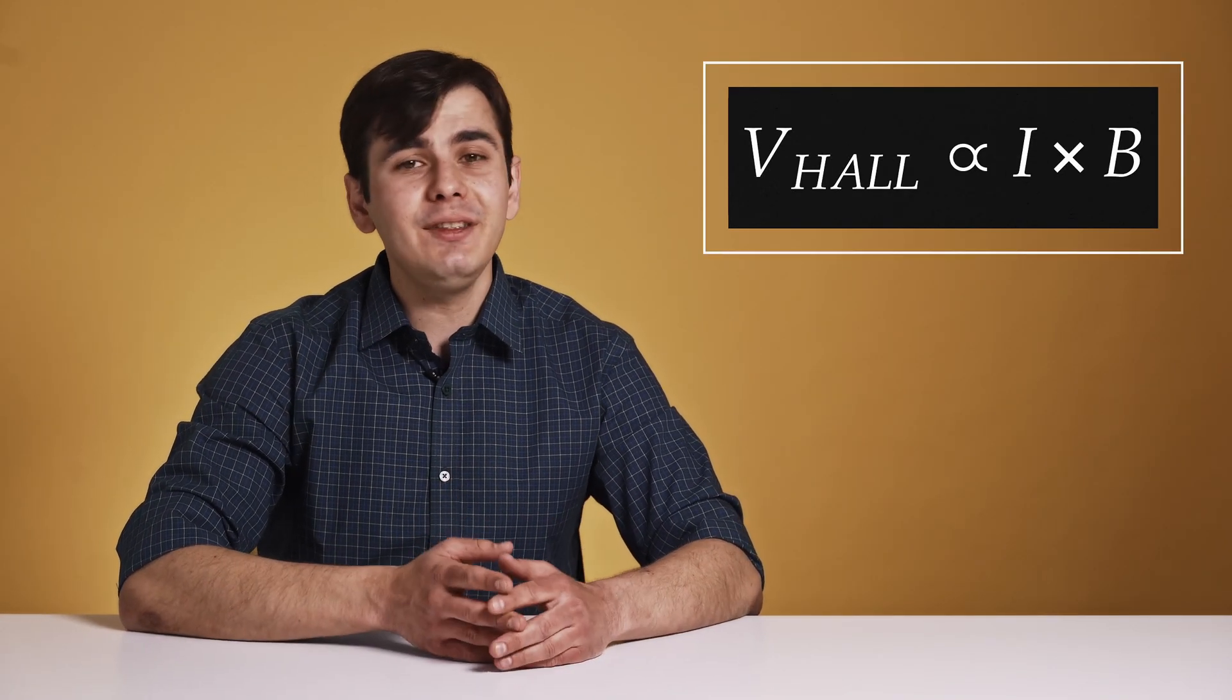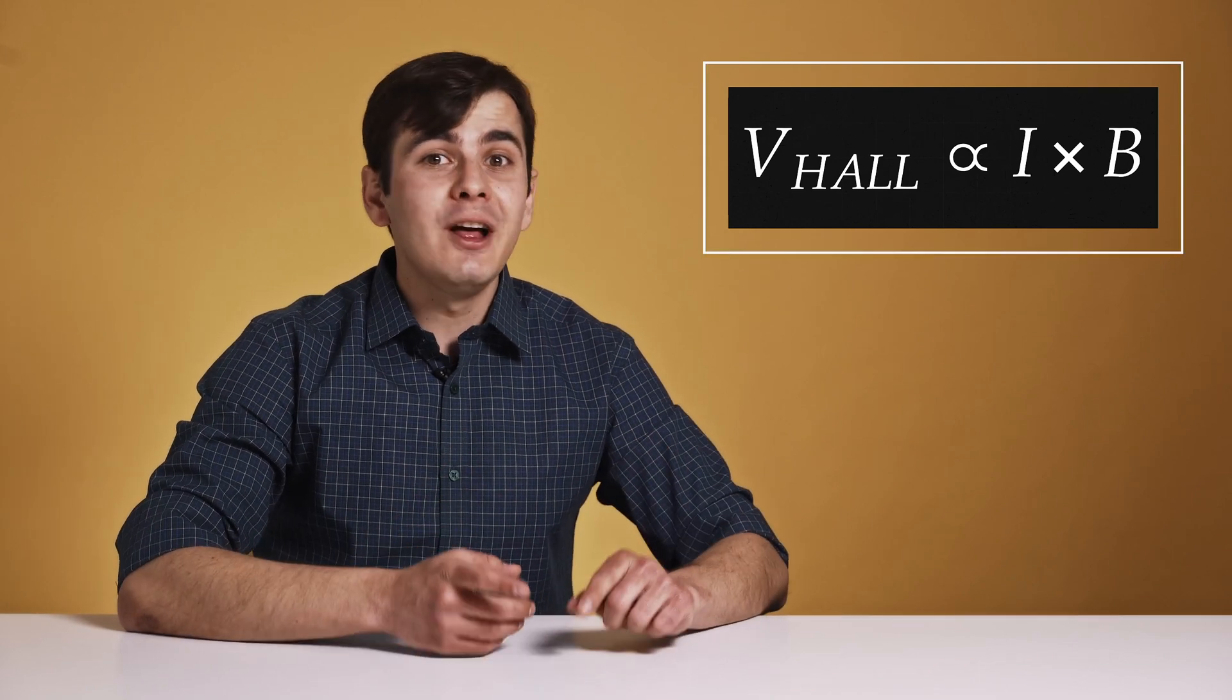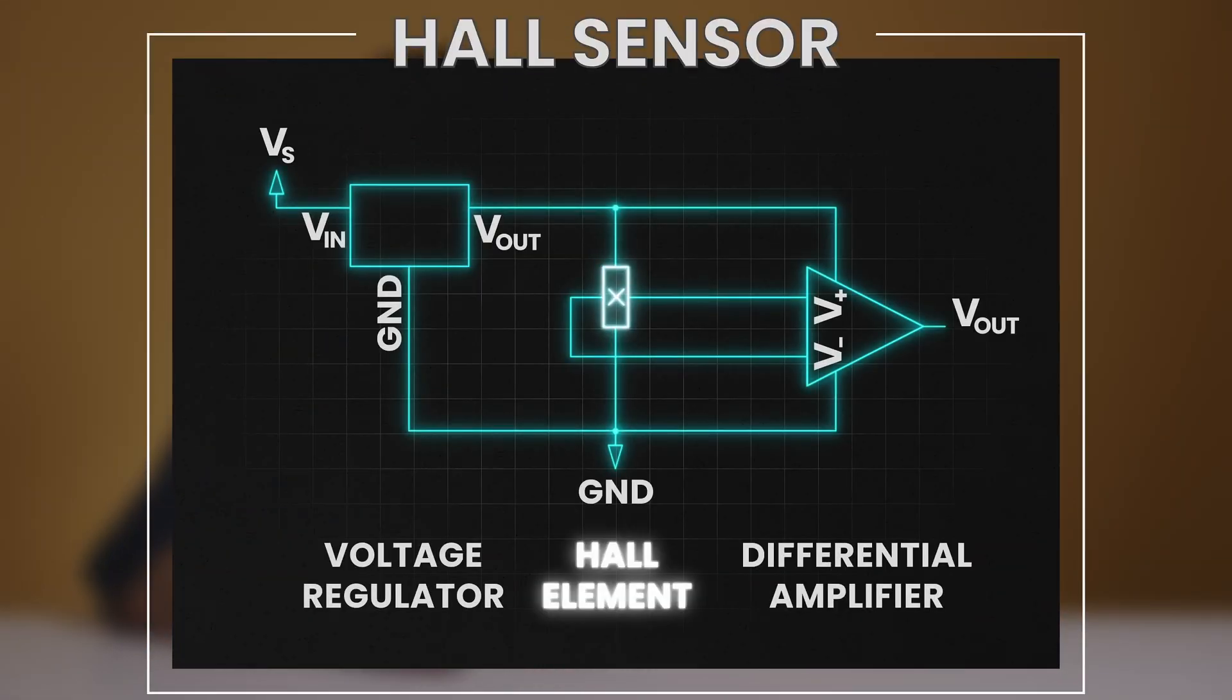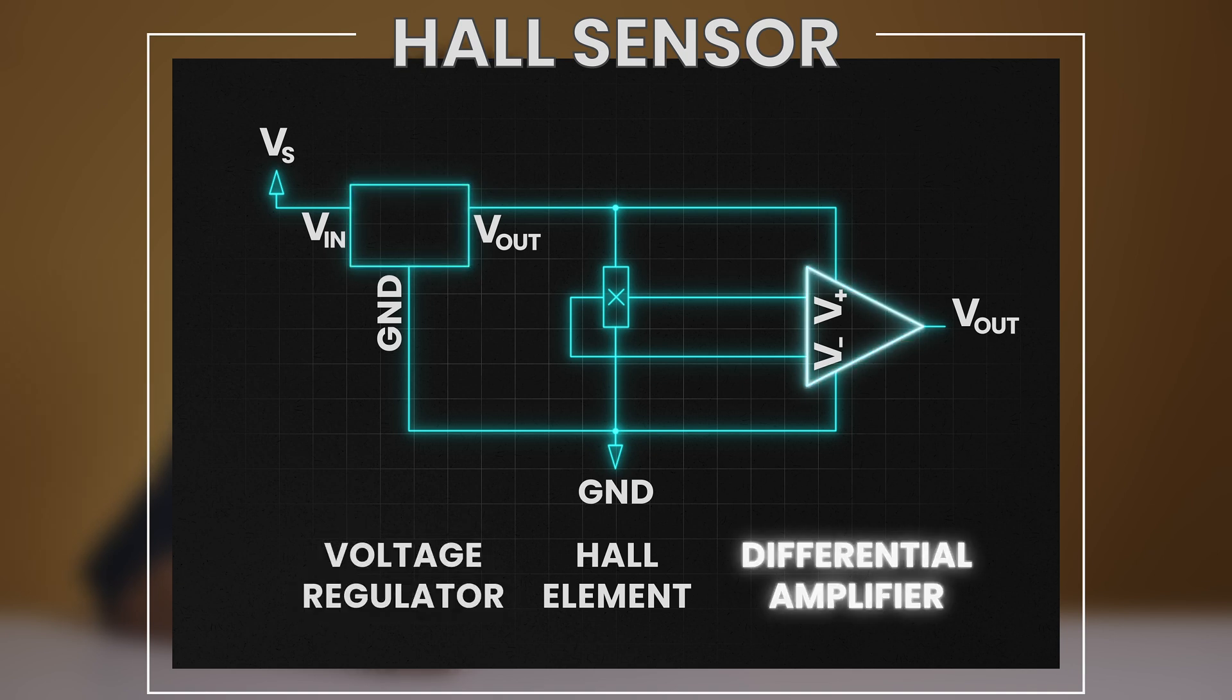The Hall voltage is proportional to the vector cross product of the current and the magnetic field, and therefore the highest value is when the sensor is perpendicular to the current. The basic Hall effect sensor contains the Hall element, a regulator, and an amplifier.